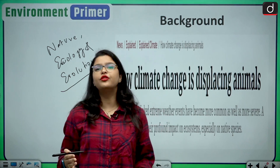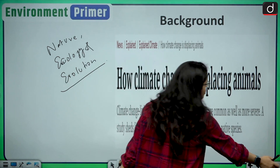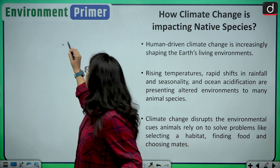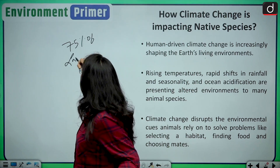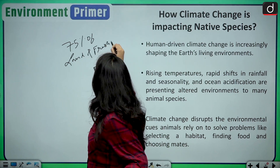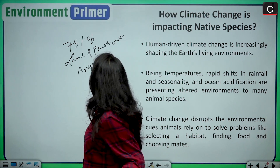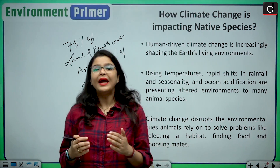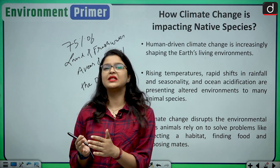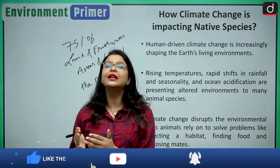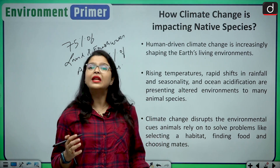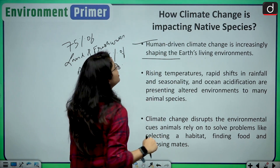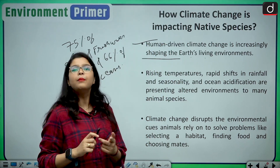This brings us to the central question: how is climate change impacting our native species? Climate change impacts are severely damaging native species. Human activities have already damaged 75% of land and freshwater areas and 66% of the oceans. The IUCN Red List states that a quarter of our native species are facing extinction, and climate change is adding to that threat.